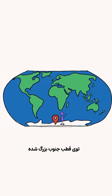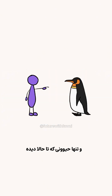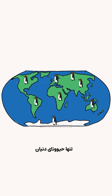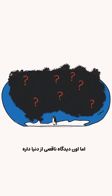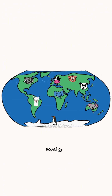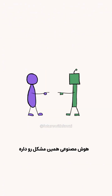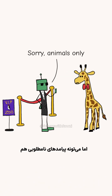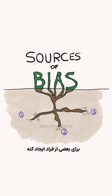Imagine a child who grew up in Antarctica, and the only animal they ever saw was a penguin. They would think that penguins are the only animals in the world, but they have an incomplete worldview because they haven't seen all the other animals that exist. AI has the same problem, which can limit its abilities, but also create unfavorable outcomes for some people.